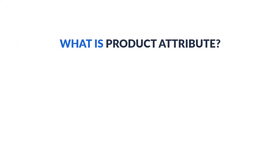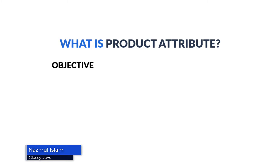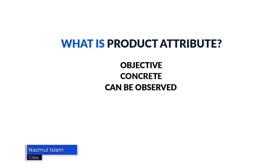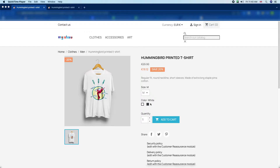Product attributes are the properties of a product that influence the customer's buying decision. Product attributes are objective, concrete, and can be observed. These are the attributes of the product.